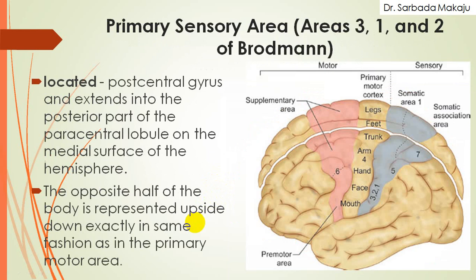The next functional area in the cerebral hemisphere is the primary sensory area, area number 3, 2, 1. This portion is known as the primary sensory area. It is located in the postcentral gyrus, and also extends from the medial surface of the cerebral hemisphere — that lobe is known as the posterior part of the paracentral lobe. The opposite half of the body is represented in exactly the same upside-down fashion as in the primary motor area.